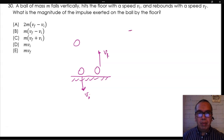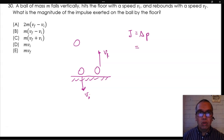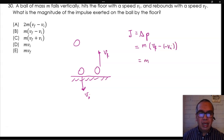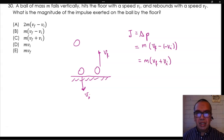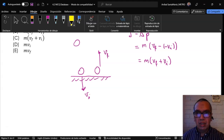The magnitude of the impulse is equal to the change in momentum. We have to be careful here, because the symbols they gave us correspond to speed, not velocity. Therefore, the change in momentum can be written as mass times VF minus negative VI, or mass times VF plus VI. The correct answer, then, is C.